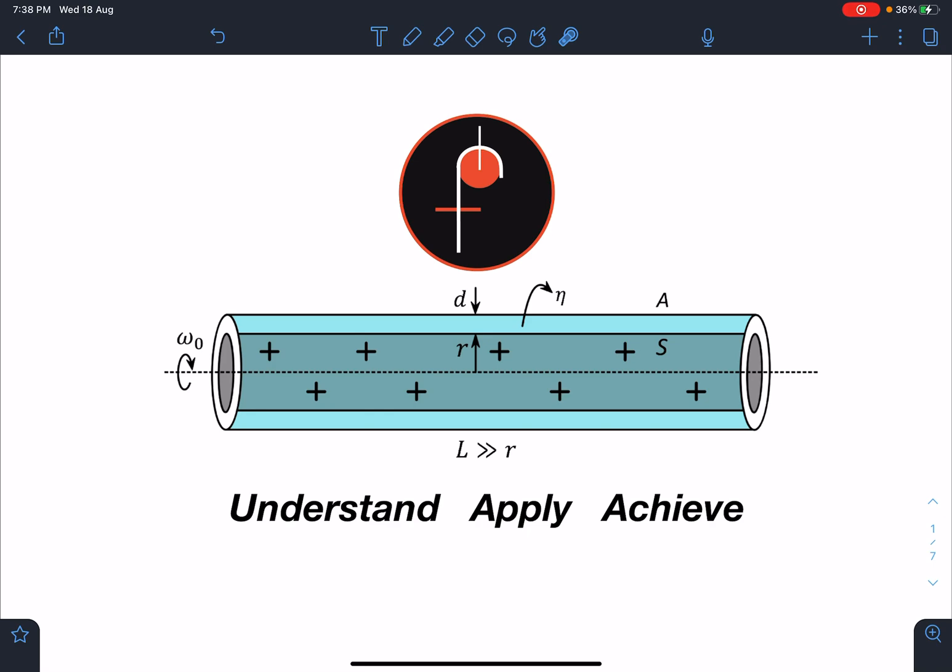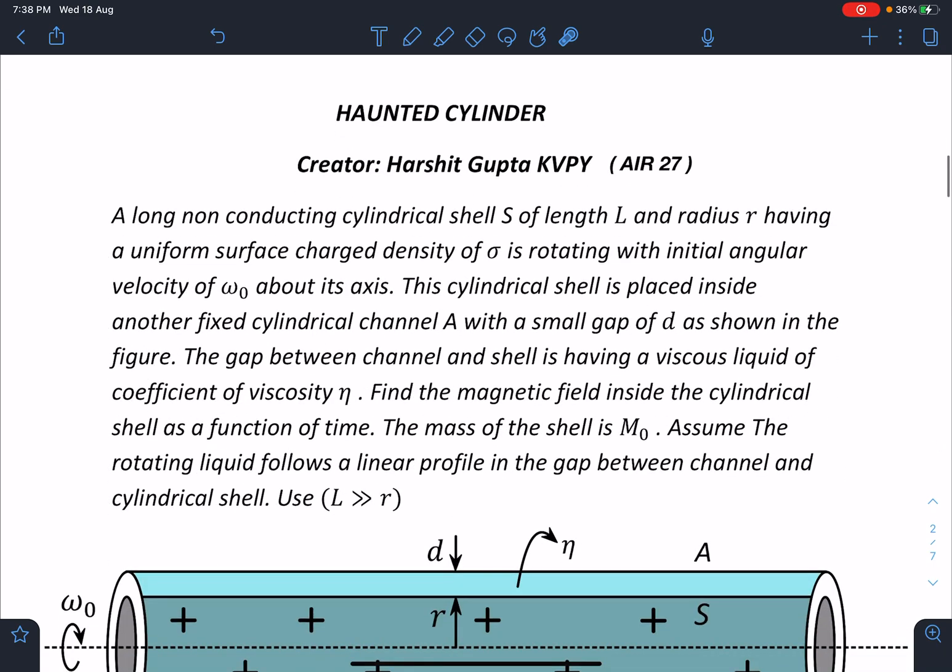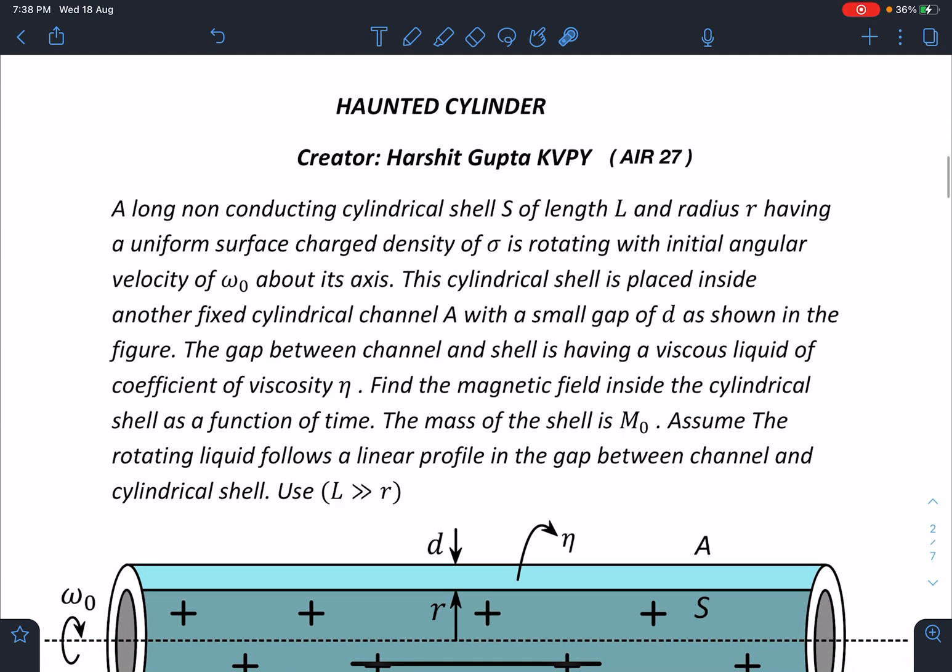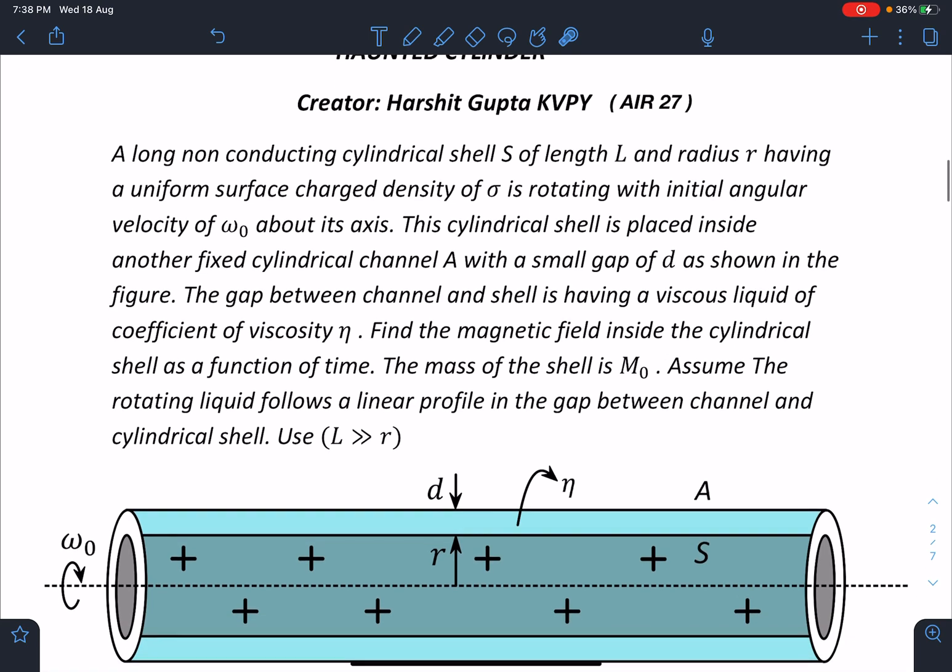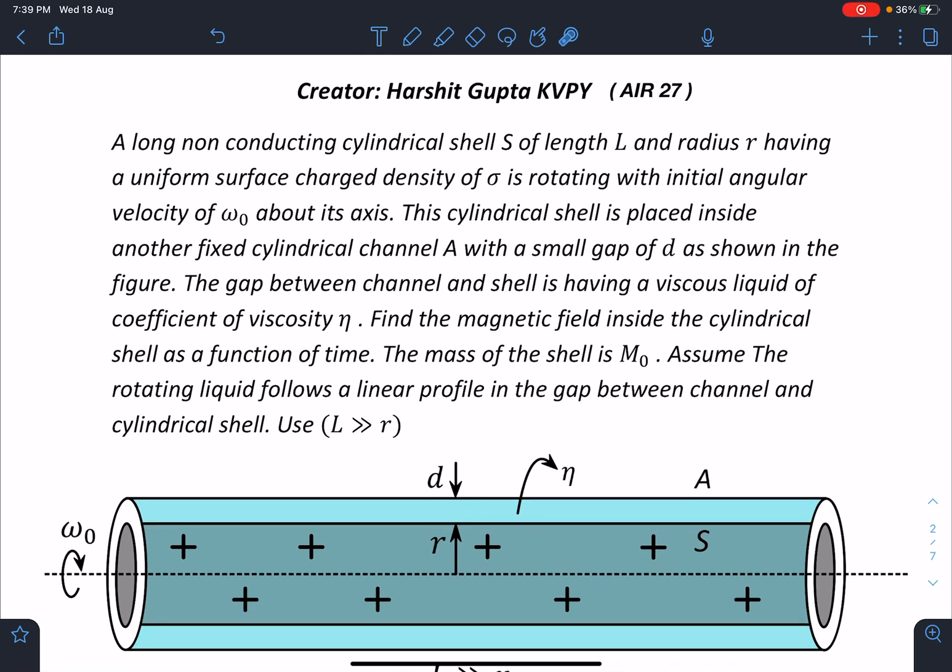The name of this problem is Haunted Cylinder and the creator is Harshit Gupta. Many of you know him - he is KVPY rank 27, all India rank 27. It's a very beautiful problem made by him and I'll request everyone to give maximum number of likes to Harshit Gupta.